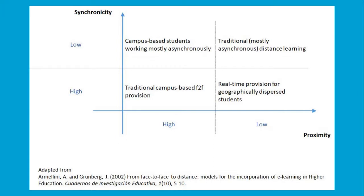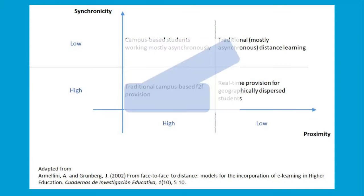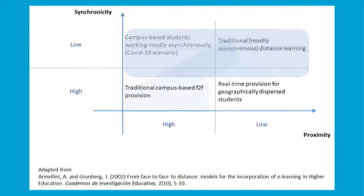Our model shifted from March last year. For campus-based institutions like Northampton, we moved from the bottom-left as our primary area to another part of the diagram — and we have to understand what that shift means. We shifted from a traditional campus-based provision to something else, and each institution had to figure out what that something else looked like. It wasn't always straightforward or easy, and there were lots of issues to address.